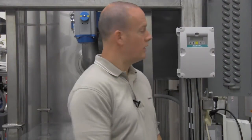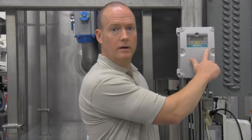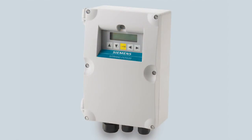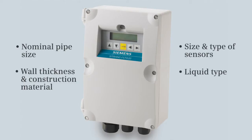For this exercise, we will program the meter using the keypad. To configure the FSTO20, we need the following application details: the nominal pipe size, wall thickness and construction material at the sensor location, the size and type of sensors we will be using, and the type of liquid we will be measuring. We only need to set four parameters to start measuring flow.